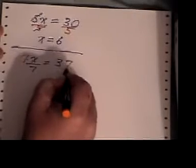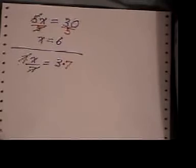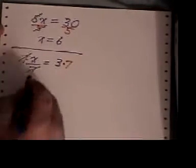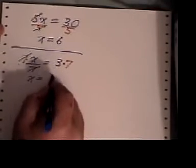But whatever I do to one side, I have to do to the other. Here, the two 7's cancel. And again, you're just left with x on the left-hand side and 3 times 7, or 21, on the right-hand side.